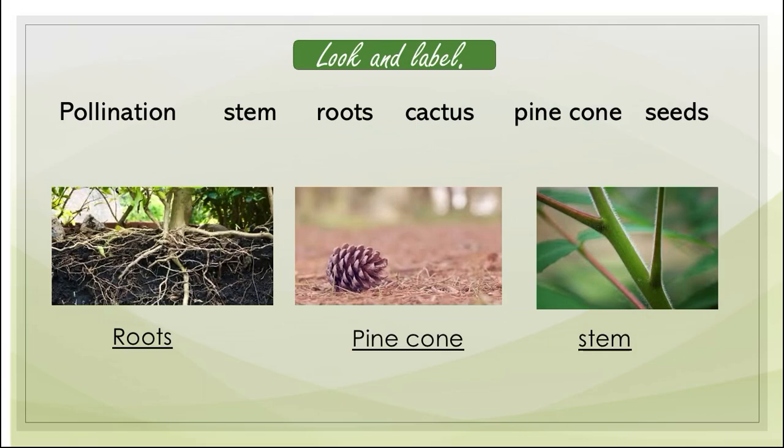Before starting the lesson, we have an activity to do which is Look and Label. You have pictures in front of you and a word bank — you have to label these pictures. The first picture shows roots, the second picture shows a pine cone, and the third picture shows stem. Stem is the lower part of the flower, or the part of the plant on which a leaf or flower can grow.